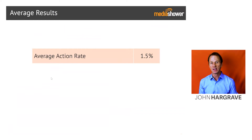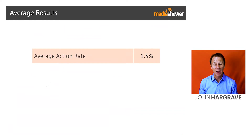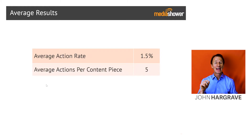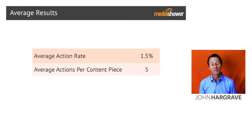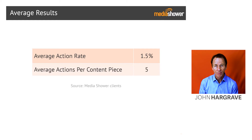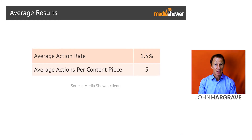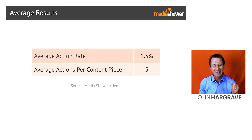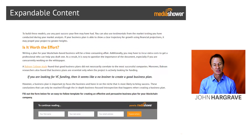The average results across all of our Media Shower clients for action rate is about one and a half percent, and the average number of actions per content piece is about five. If you look at these numbers and think, 'Well, that's kind of low' — I agree. That's why your job is to beat these numbers, to help us increase that average by creating content that gets even more actions. That's what you're going to learn in this series.